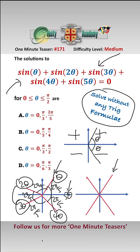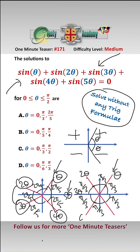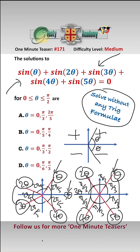We can also use symmetry to split the circle into six equal parts, each of π/3. We label these angles theta, 2 theta, 3 theta, 4 theta, and 5 theta.